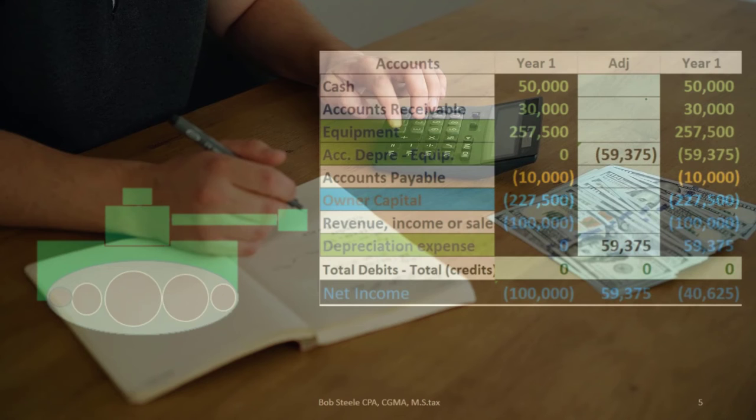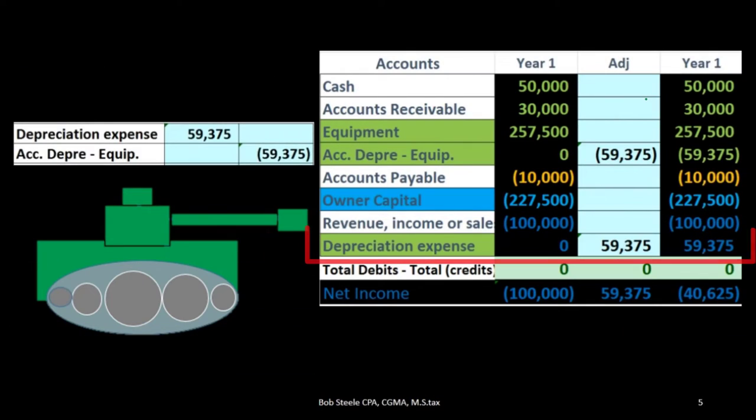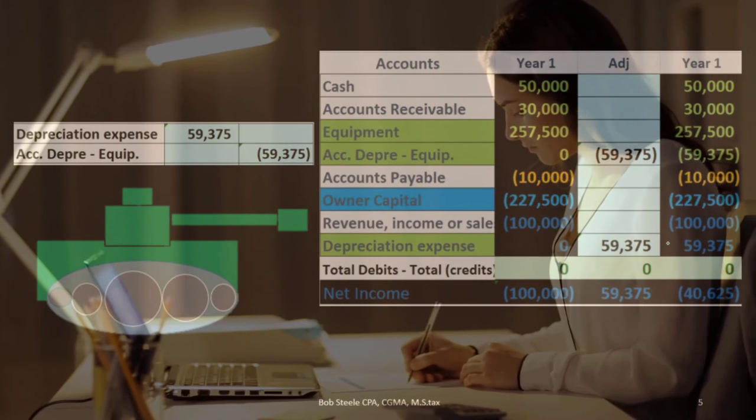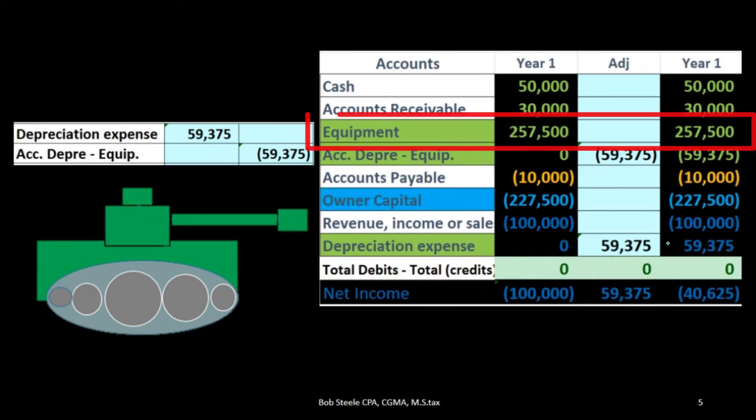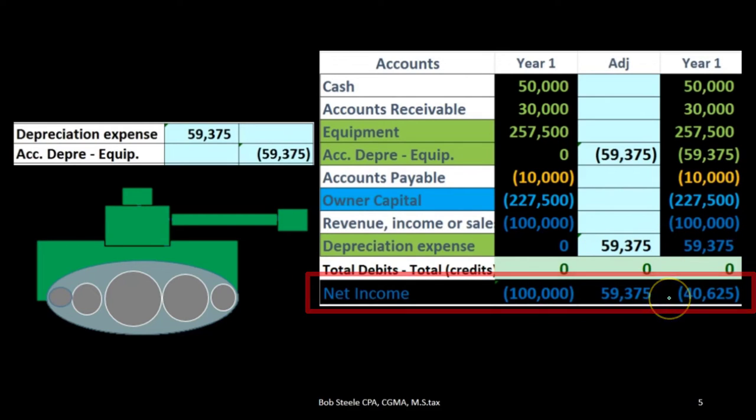If we record the depreciation for year one, we would have a debit to depreciation expense allocating the expense for that year. So of the cost of $257,500, we believe we're going to use up $59,375 of it, therefore decreasing net income by the amount consumed in accordance with the matching principle.